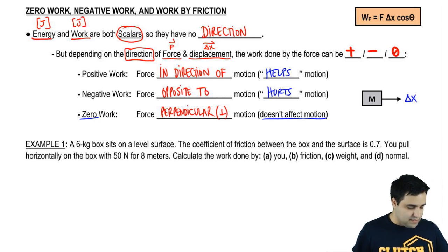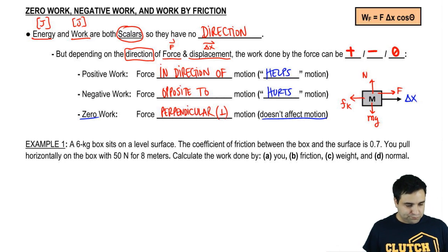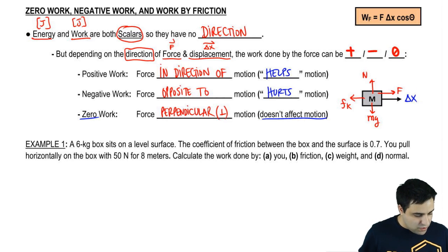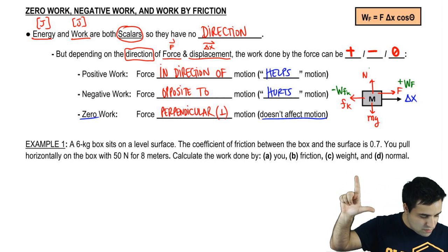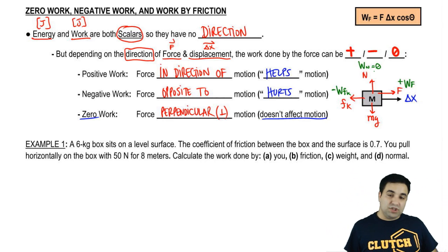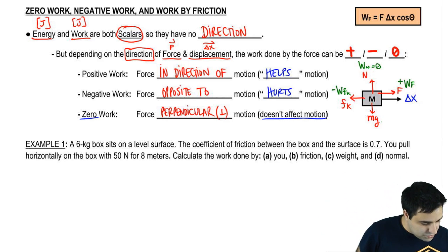This box here is moving to the right with delta x. It's moving to the right because I'm pushing with the force F, and there's also kinetic friction holding me back a little bit, mg down and normal up. F is in the direction of motion, so the work done by F would be positive. Friction is opposite to motion, so the work done by kinetic friction is negative. Normal is perpendicular to the motion—I'm moving to the right, normal is up. That's 90 degrees, so the work done by normal will be zero. And mg is also perpendicular to the motion, so the work done by mg is also zero.